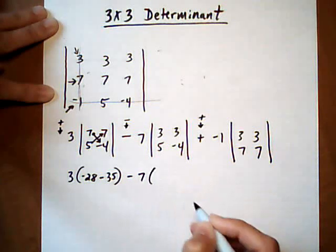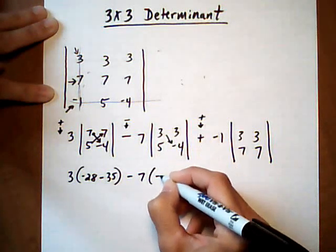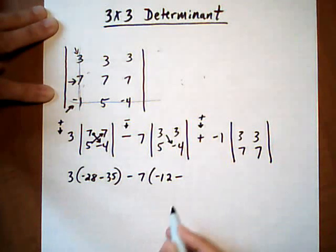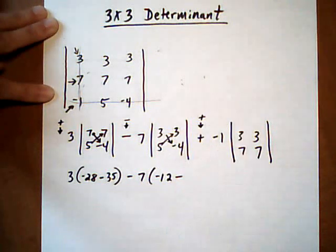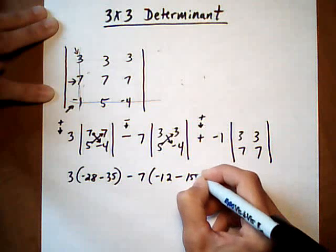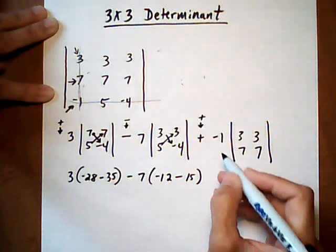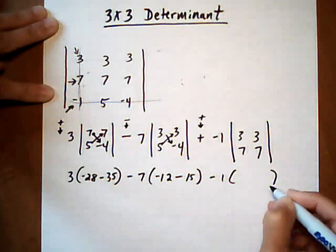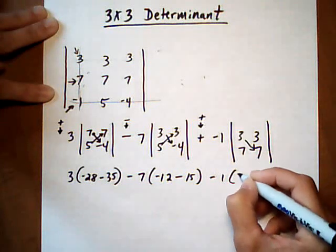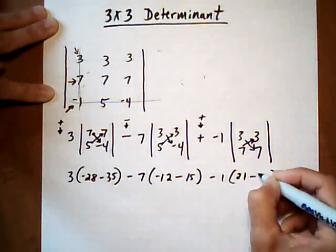Next one, take away 7 times minus 12, take away, and go ahead and put that take away in right away. Then you're going to take away whatever this turns out to be. 5 times 3 is 15. And then plus a negative 1 is the same as take away 1, times 21, take away 21.